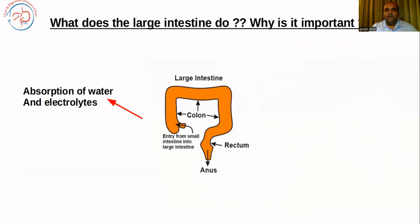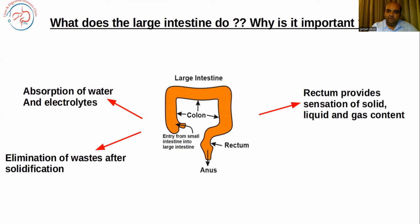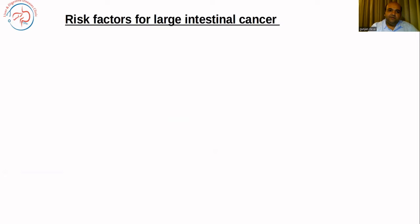The large intestine is the reservoir for stools. It stores the stools, but more than that, the large intestine is the most important part of the body for absorption of water and electrolytes. If the large intestine is not there, a lot of absorption of water and electrolytes does not happen. The rectum provides the sensation for solid, liquid, and gas content, and helps us in holding the stools until we reach a socially acceptable location. It also helps for elimination of waste after solidification and is essentially a muscular tube for stool evacuation.